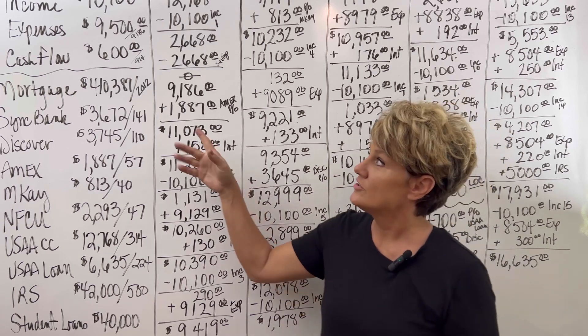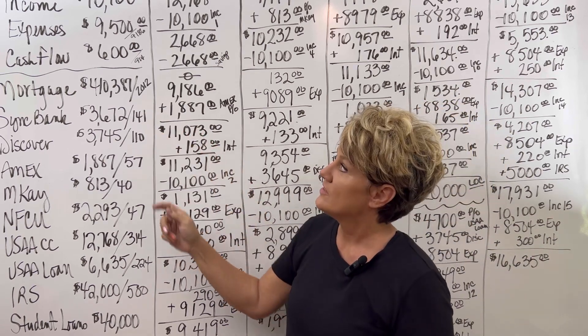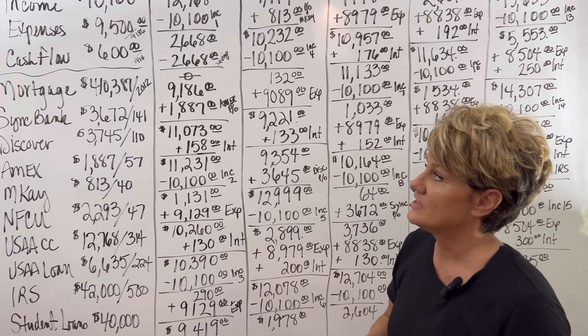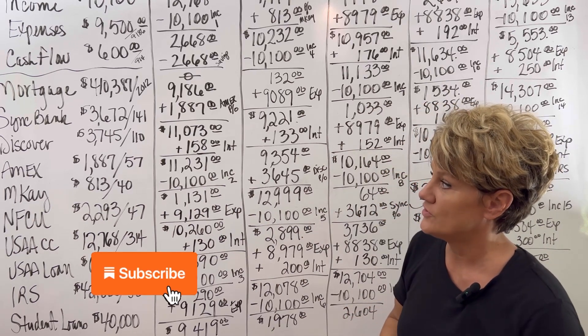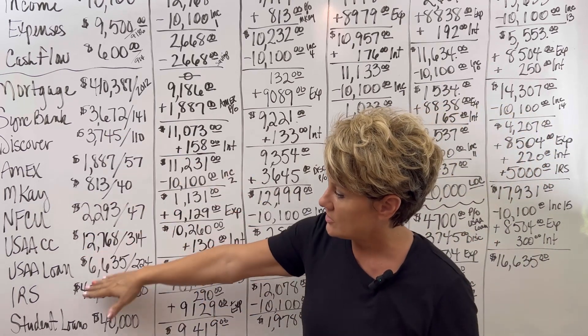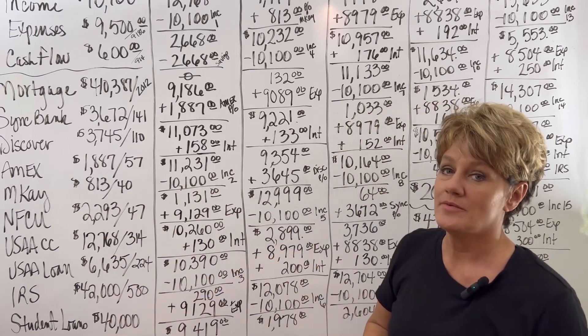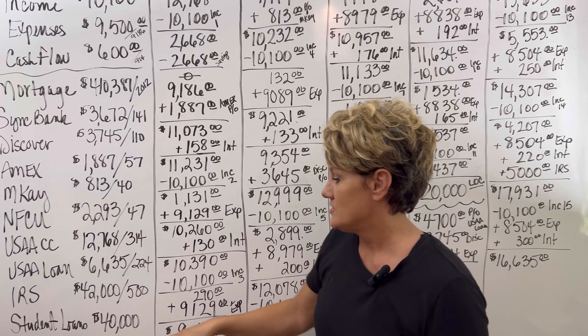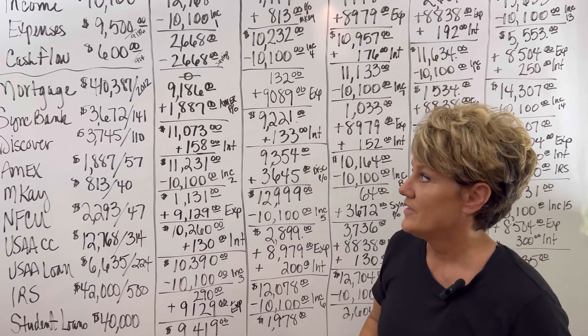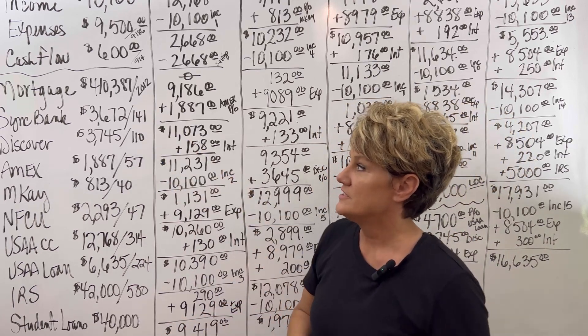Their income is currently $10,100. Their expenses stand at $9,500 and they have about $600 in cash flow. They have a lot of credit cards, the IRS also has them at $42,000, student loans at $40,000, and then the mortgage at $410,000.